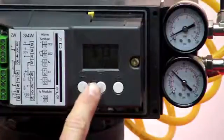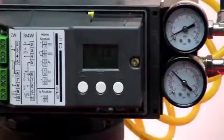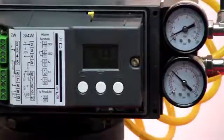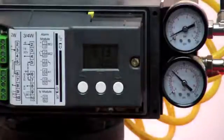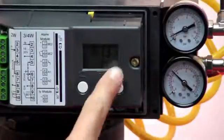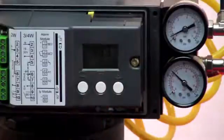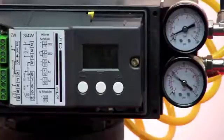I can place the positioner in automatic mode by hitting the mode key once. And you can see that my input signal is fifty-one percent and that's exactly where the positioner is now. If I vary my control signal input, the positioner tracks accordingly.